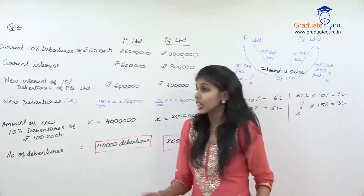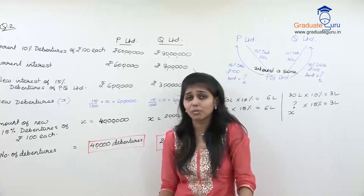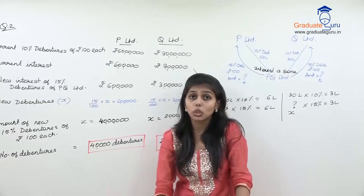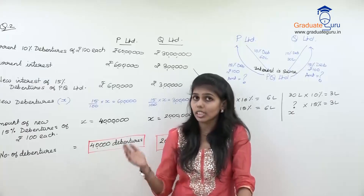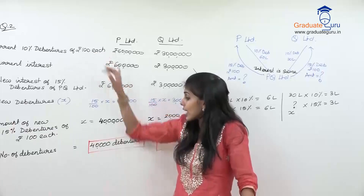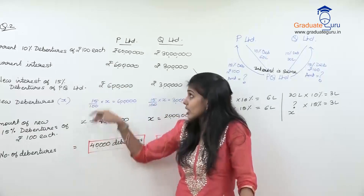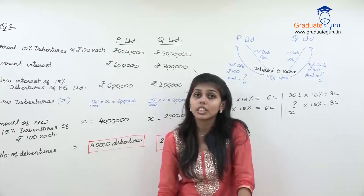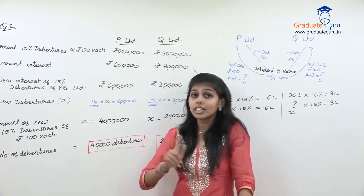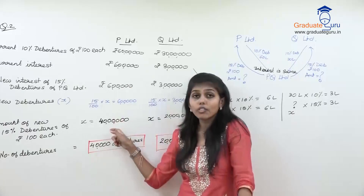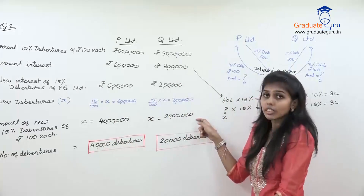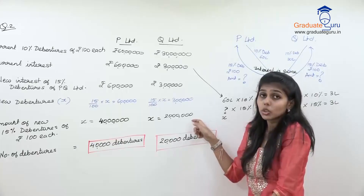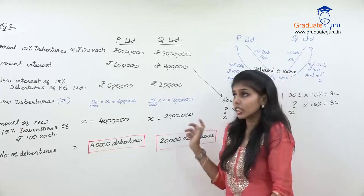Yeh samjha — yeh bahut important hai. Ab yaad karo: agar PC ka calculation aaya aur debentures aap minus karo as a liability in net asset method — will you take 60 lakhs or 40 lakhs? Yeh 40 lakhs hoga — kyunki assets and liabilities are to be taken at agreed value. In case of Q limited, 30 lakhs ke saamne 20 lakhs. Yes — you will take 20 lakhs, because it is to be taken at agreed value. Chalo.